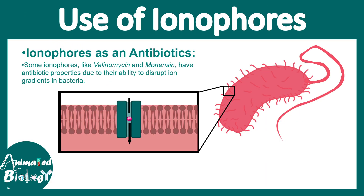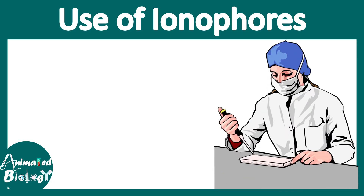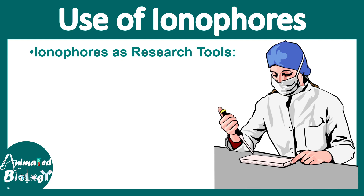Ionophores can also be used as antibiotics. For example, valinomycin and monensin have antibiotic properties due to their ability to disrupt gradients in bacteria. They compromise bacterial biology by altering biochemical gradients, and they act particularly on gram-positive bacteria.